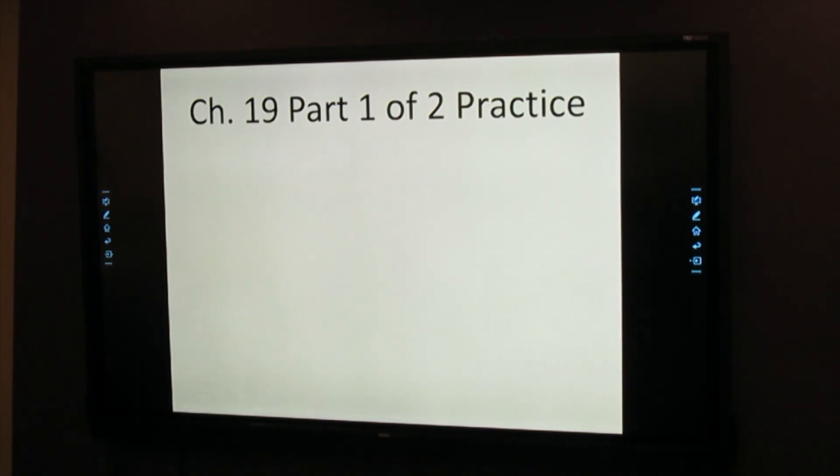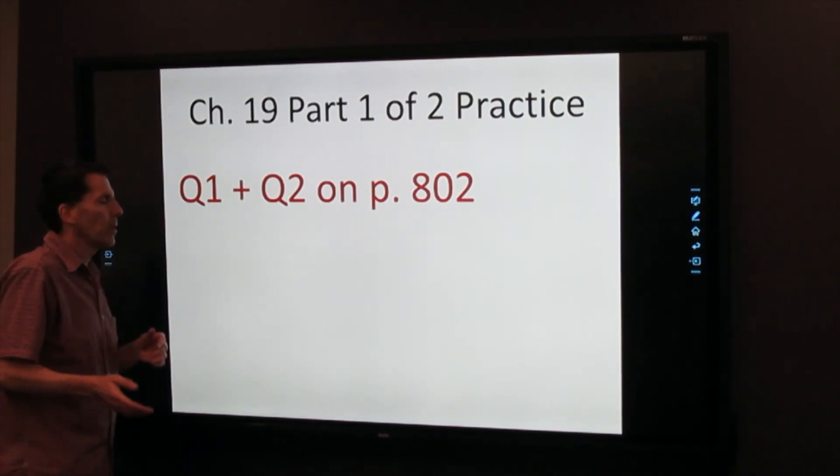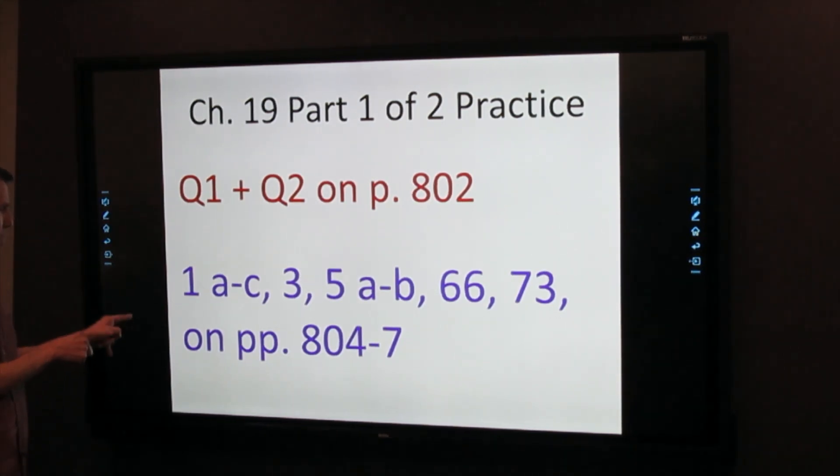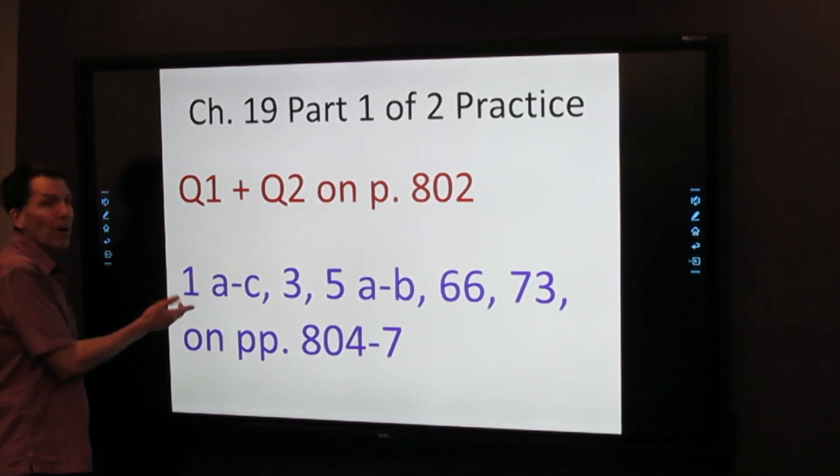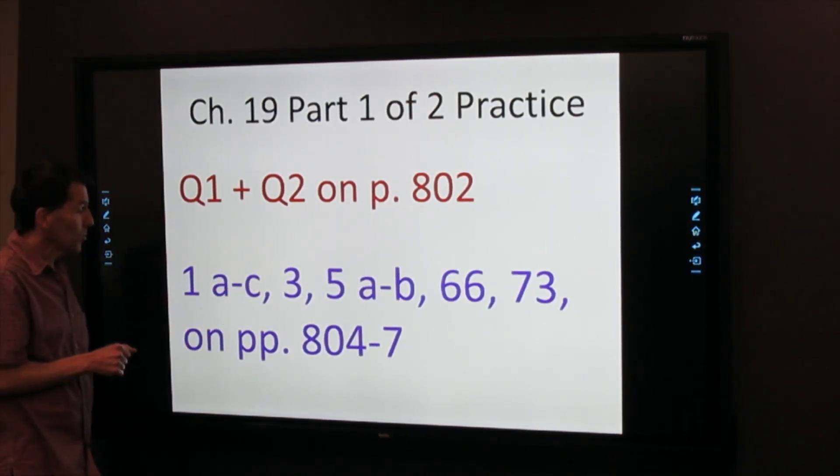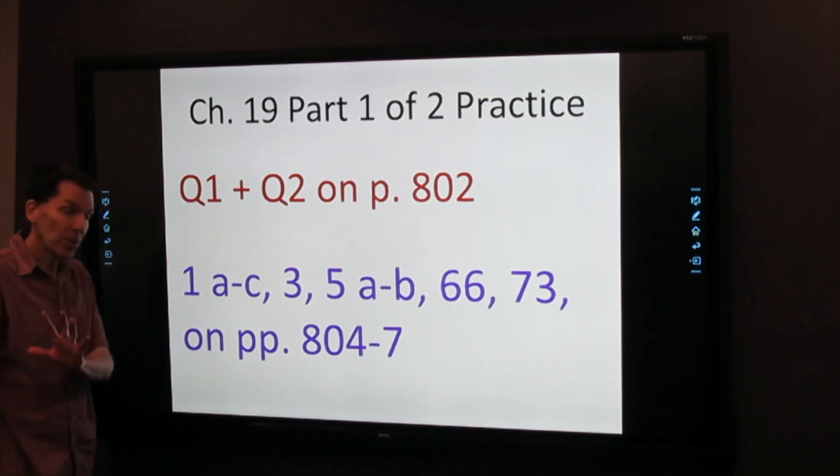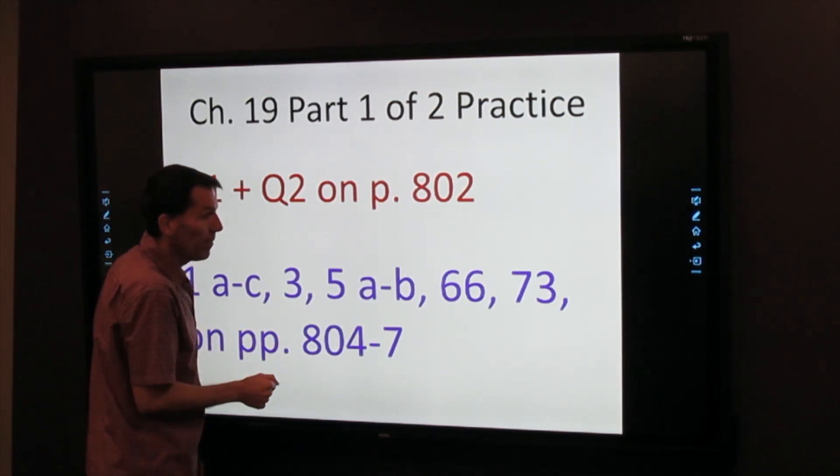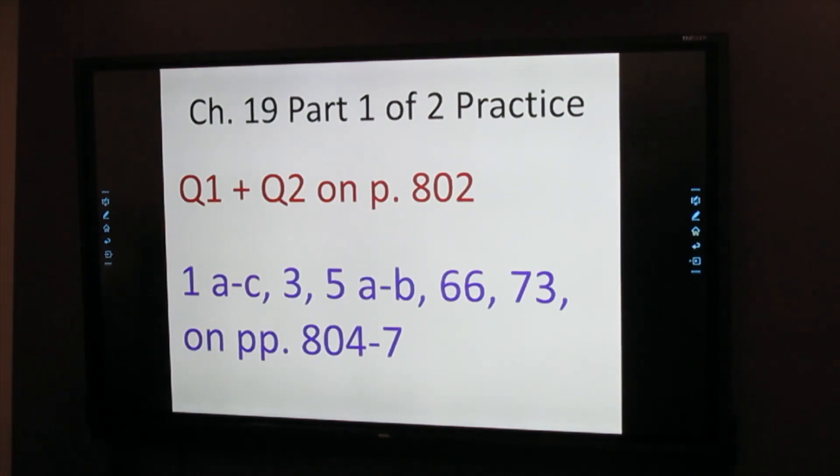Well, that ends part one. Here is some practice for part one. Q1 and Q2 on page 802 deal with radioactive decay and the multiple choice questions. These are some excellent book questions. Be cautious if you do problem one on 804, only do parts A through C. Three and five, do A and B only on five. And then here are some later ones, 66 and 73. You can drop in on Zoom, or email me. I'll set up a one-on-one time. I'll work with you pretty much any time of the day. Just drop me a line.